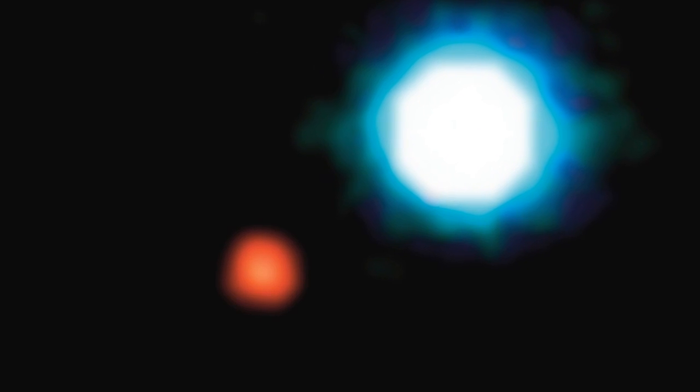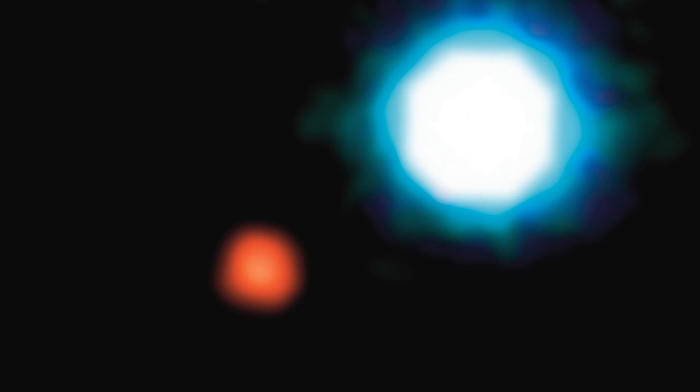And in some cases, you can even capture exoplanets on camera. In 2004, NACO, the adaptive optics camera on the very large telescope, took the first image ever of an exoplanet. The red dot in this image is a giant planet orbiting a brown dwarf star.